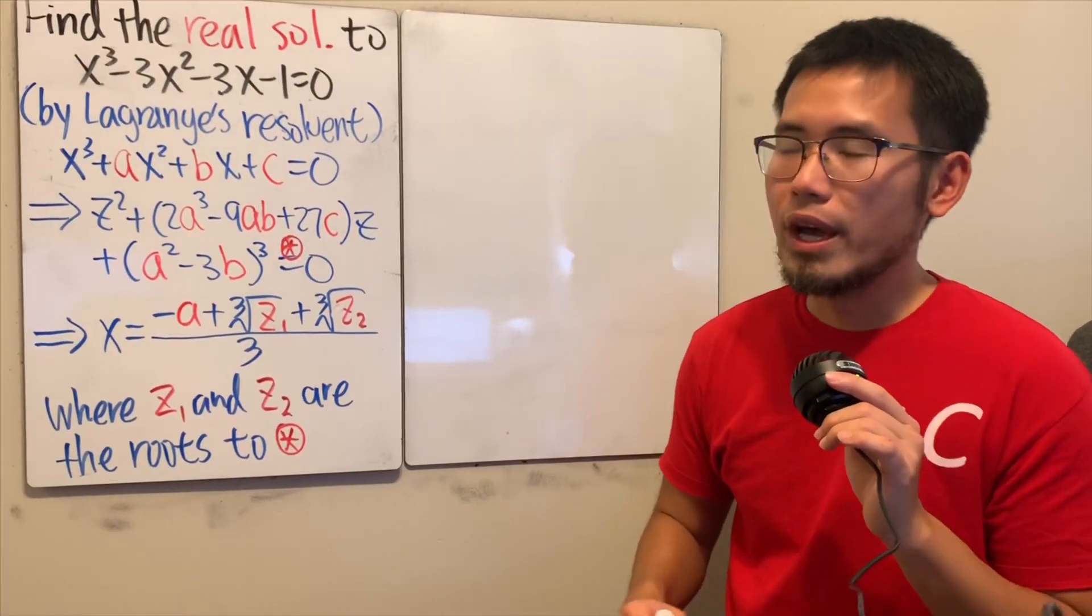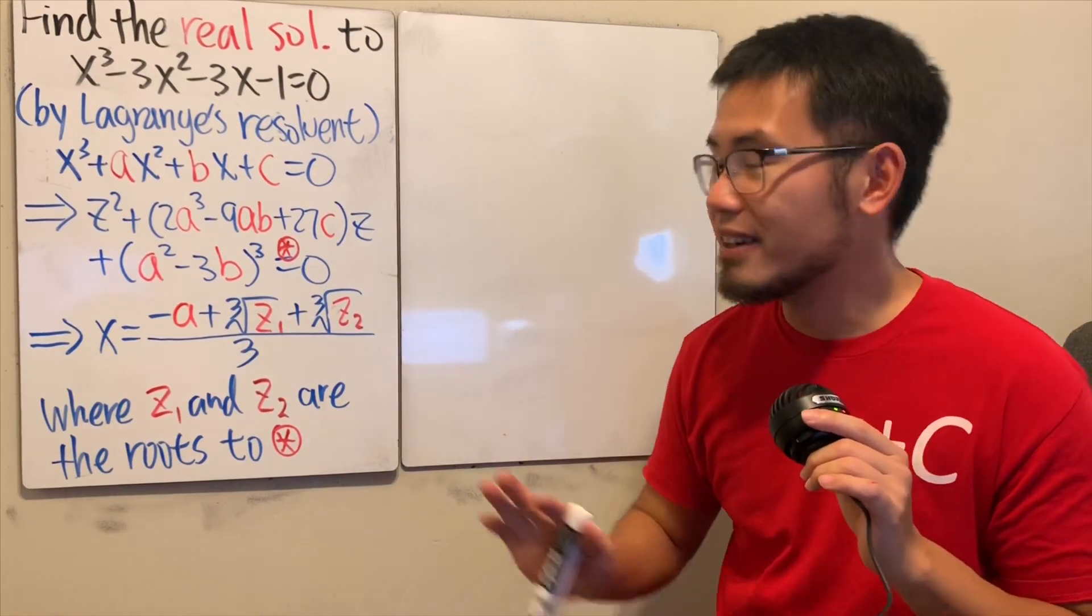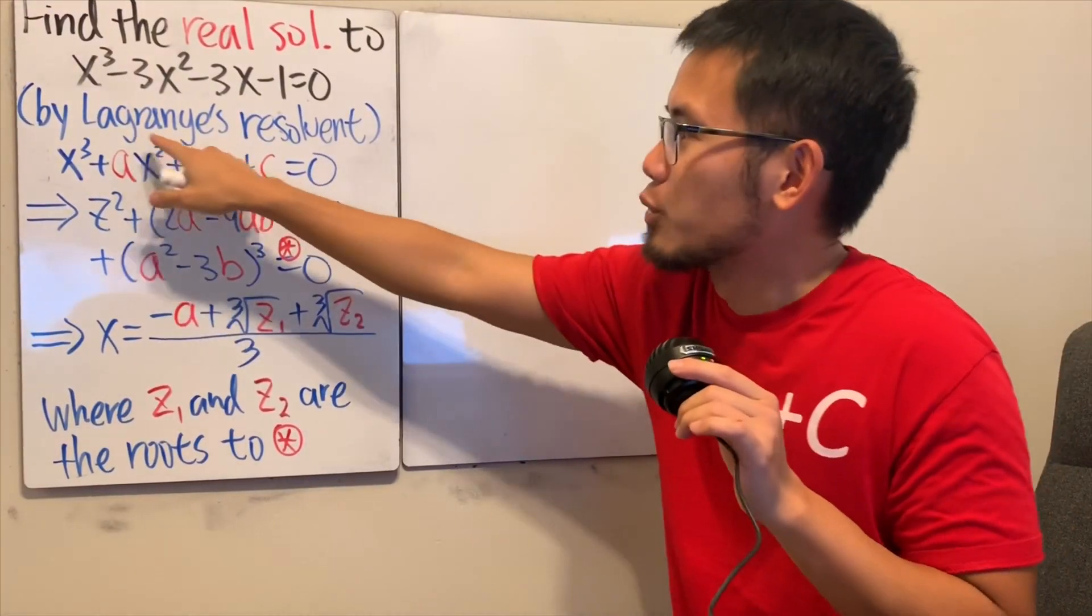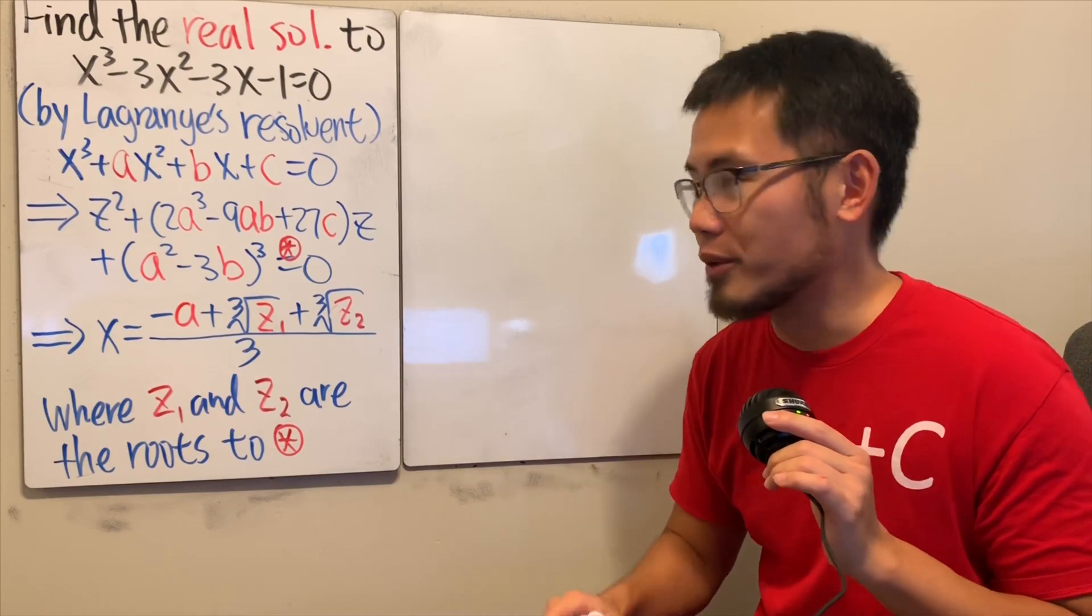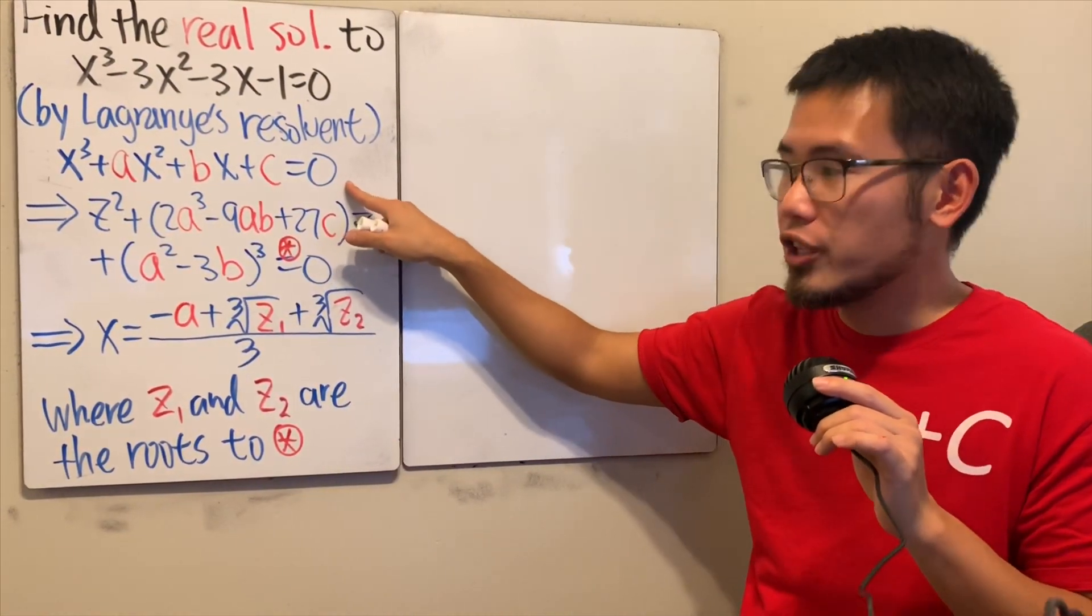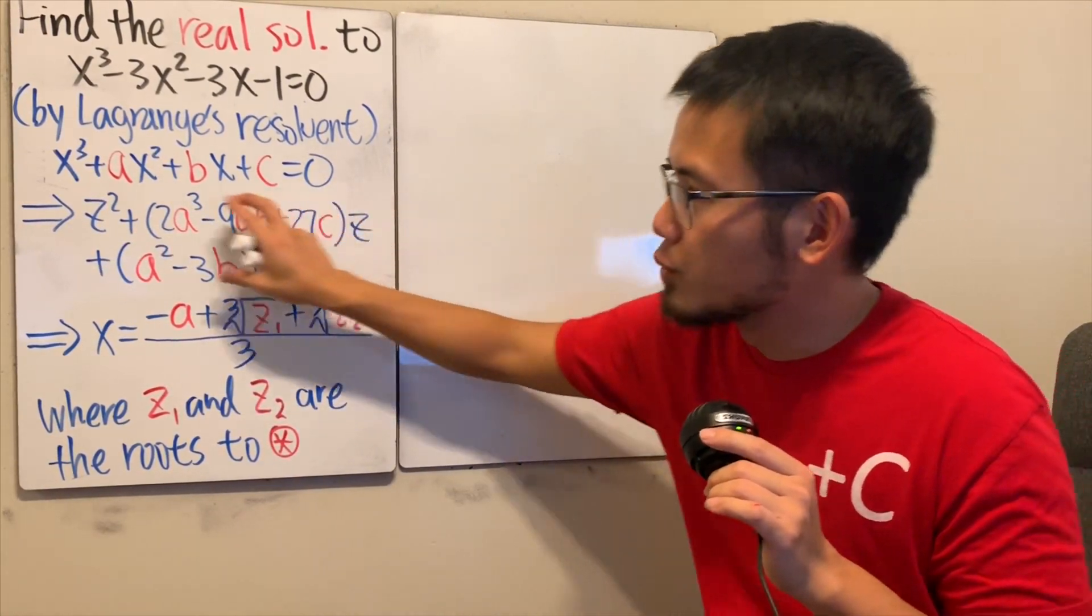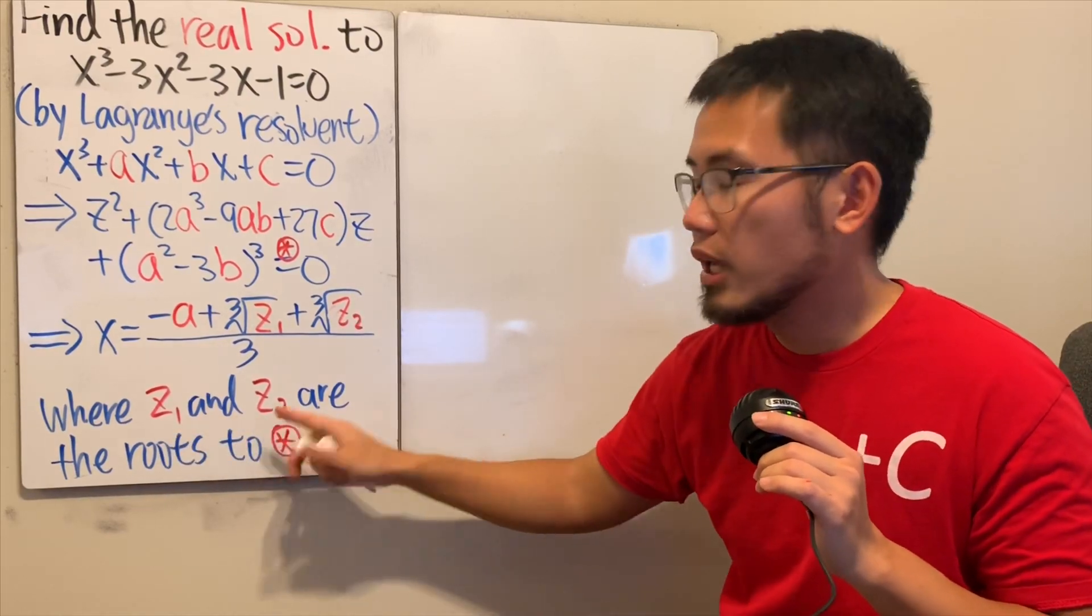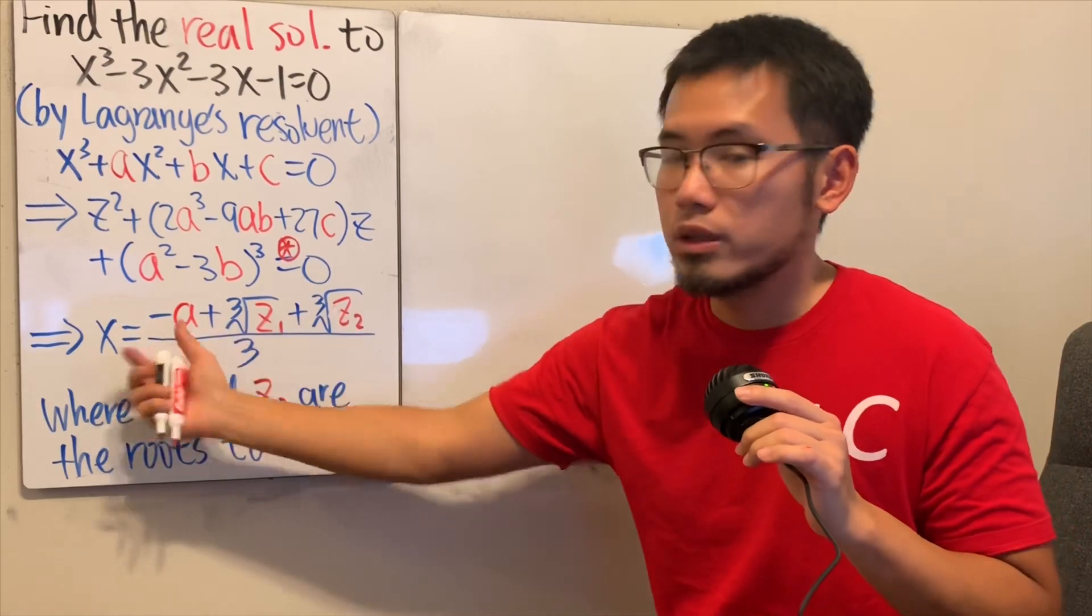All right, here's the second way. Maybe some of you have not seen this before. Me neither. I found this on Brilliant. This right here is Lagrange's resolver. Notice that this is not the cubic formula by Cardano. We start with this cubic equation and change it into this quadratic equation. We can solve this and call the solutions Z₁ and Z₂. In the end, we just put them right here and we can get the x value. That's it.